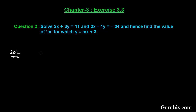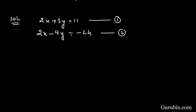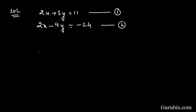We are given two pairs of linear equations: 2x plus 3y equals to 11 — let this be equation number 1 — and 2x minus 4y equals to minus 24 — let this be equation number 2. Now we shall use the substitution method to solve this pair of linear equations, starting from equation number 1.